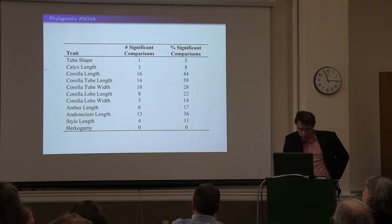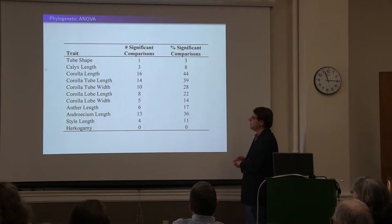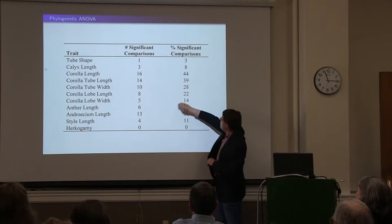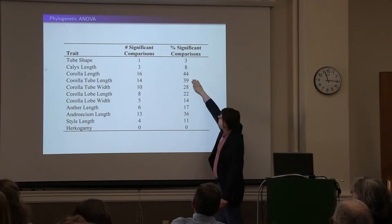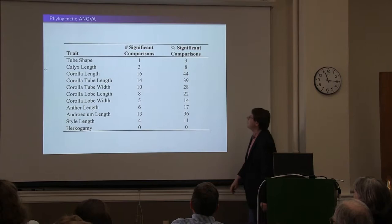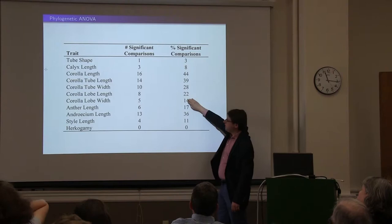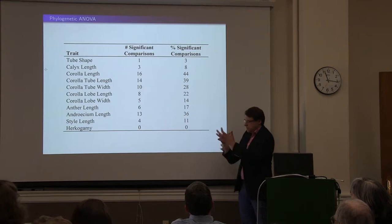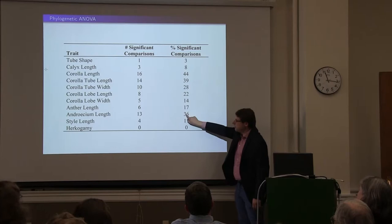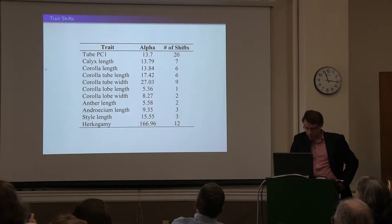How do these traits vary between our different pollinator groups? We can do an ANOVA analysis controlling for phylogeny. There are 36 possible pairwise comparisons. More importantly, looking at percent significance: essentially length measurements — corolla tube length — about 40% of those comparisons are significantly different. Corolla width is another one, and even corolla lobes — the landing platforms that pollinators see — are significantly different. Even the androecia, or the male parts, which are fused to the corolla, are significantly different: the length of the male parts are significantly different between pollinators.